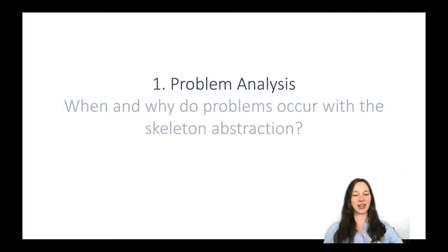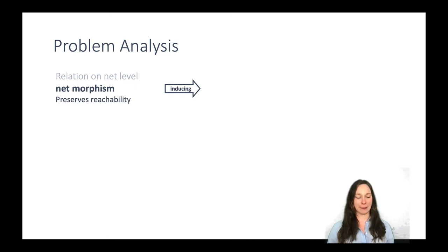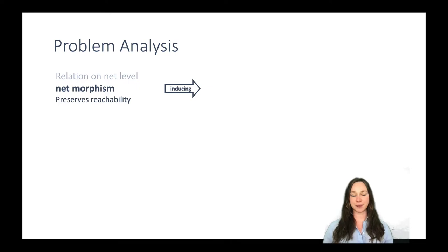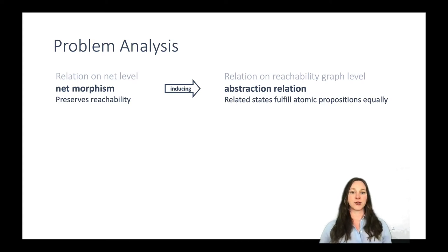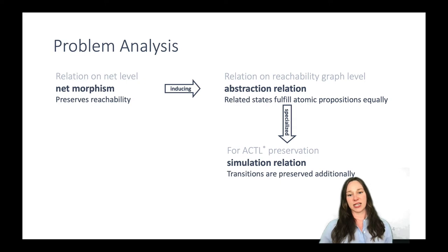This leads us to the first question: when and why do problems occur with skeleton abstraction? The colored Petri Net and its skeleton are related through a net morphism — a relation on the net level, the node structure — which preserves reachability and thus induces an abstraction relation. This abstraction relation relates states that share their atomic propositions equally. A special kind of abstraction relation is the simulation relation, which is exactly what we need for ACTL* preservation.